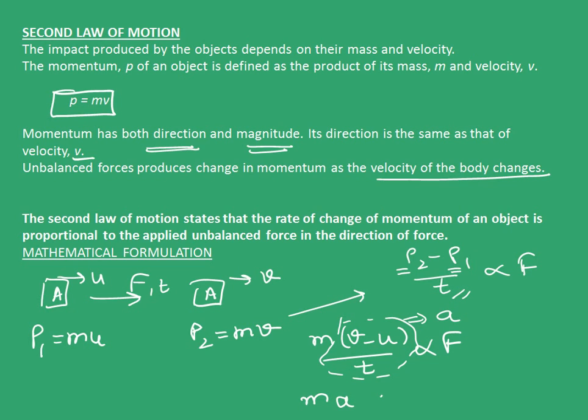Therefore, m, a is proportional to f. Now, this can be written as f equals to k, m, a, where k is the proportionality constant. Now, the value of f, m, and a are chosen such that the value of k comes out to be 1.